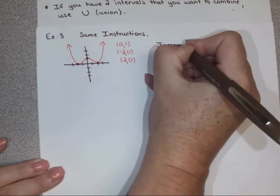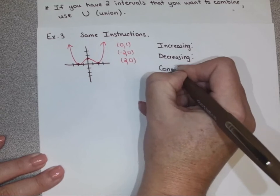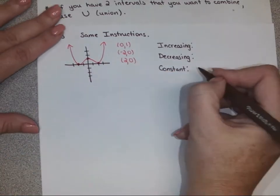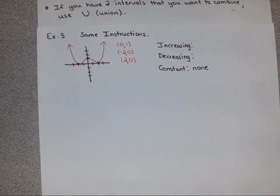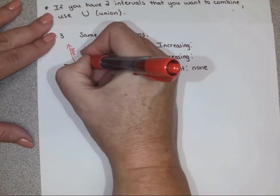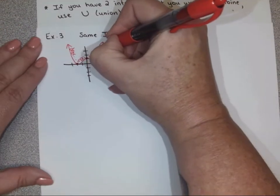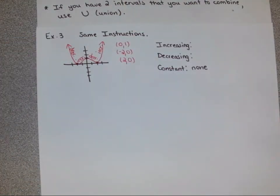We're going to state increasing, decreasing, and constant. One of these we write none for — constant. There are no flat pieces where it's constant. It changes directions a few times but is never constant. Looking from left to right, what's it doing first? It's decreasing first. So it's decreasing here, and then what does it do for a little bit? It increases, then decreases again before finishing with increasing.